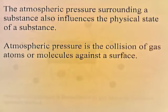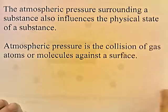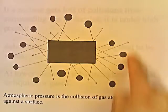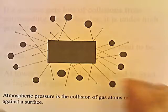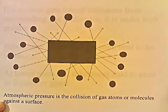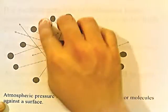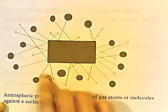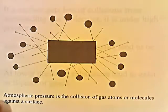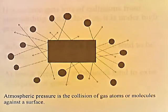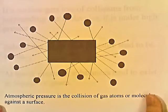Atmospheric pressure is the collision of gas atoms or molecules against a surface. Here we have a solid object, and the circles represent gas atoms or molecules — as it sits out in the open air, the air molecules or atoms collide against the surface of the solid and bounce off. So atmospheric pressure is just the collision of gas atoms or molecules against a surface. Right now your skin is experiencing atmospheric pressure — there are gas molecules bouncing off against your skin.